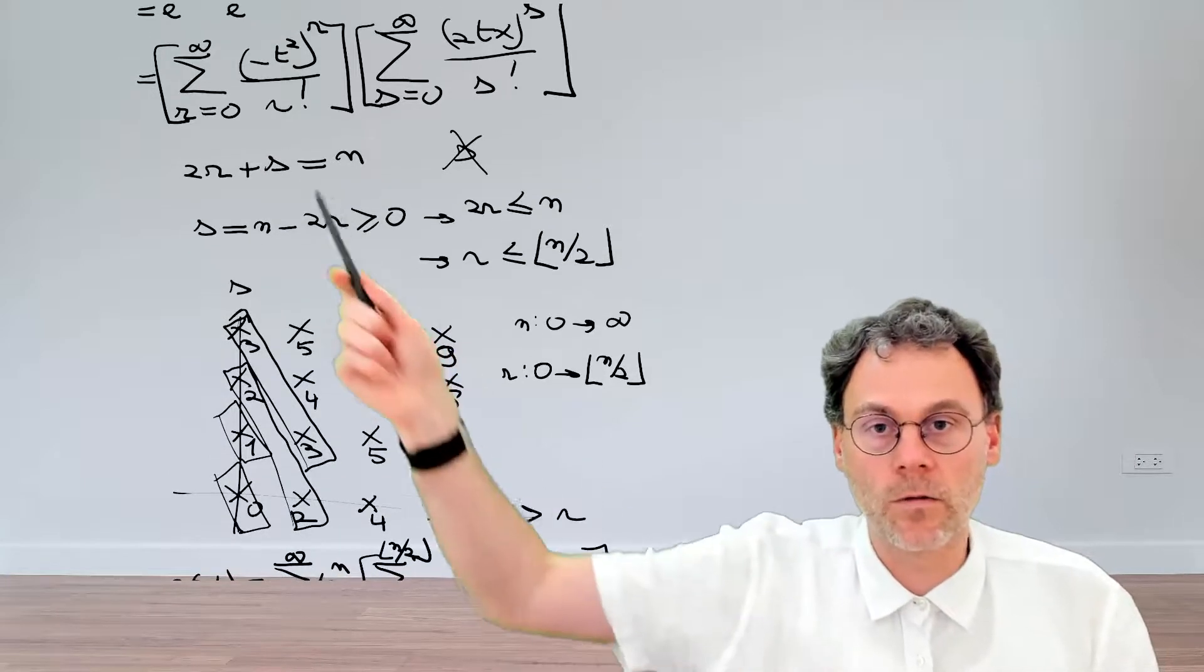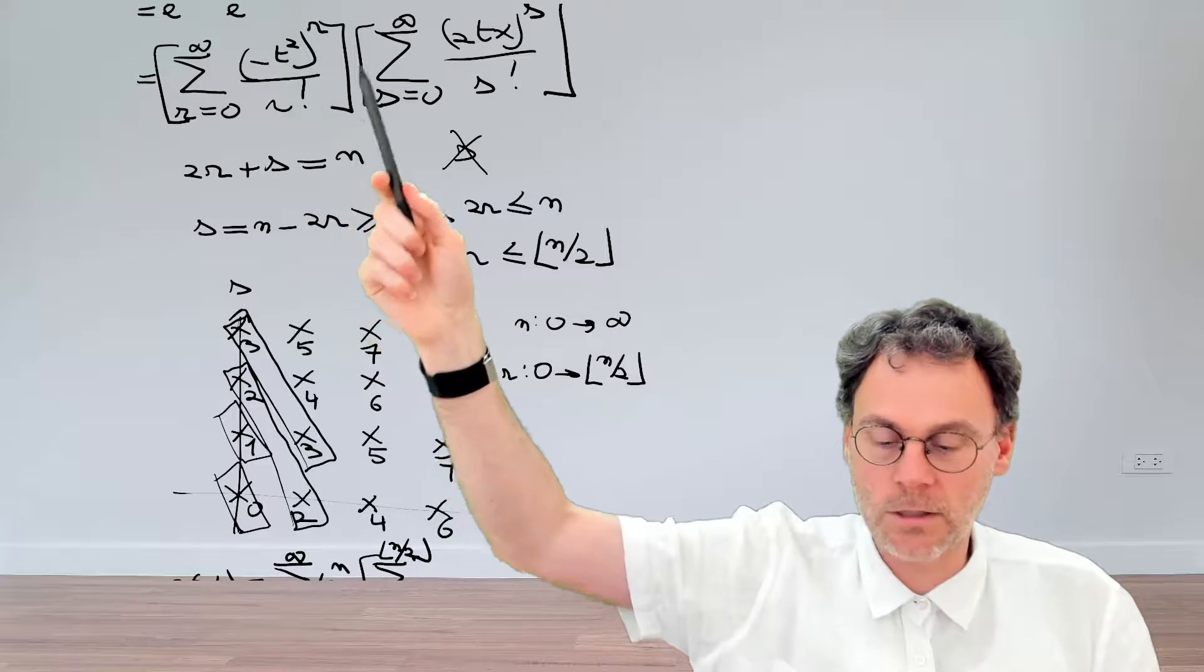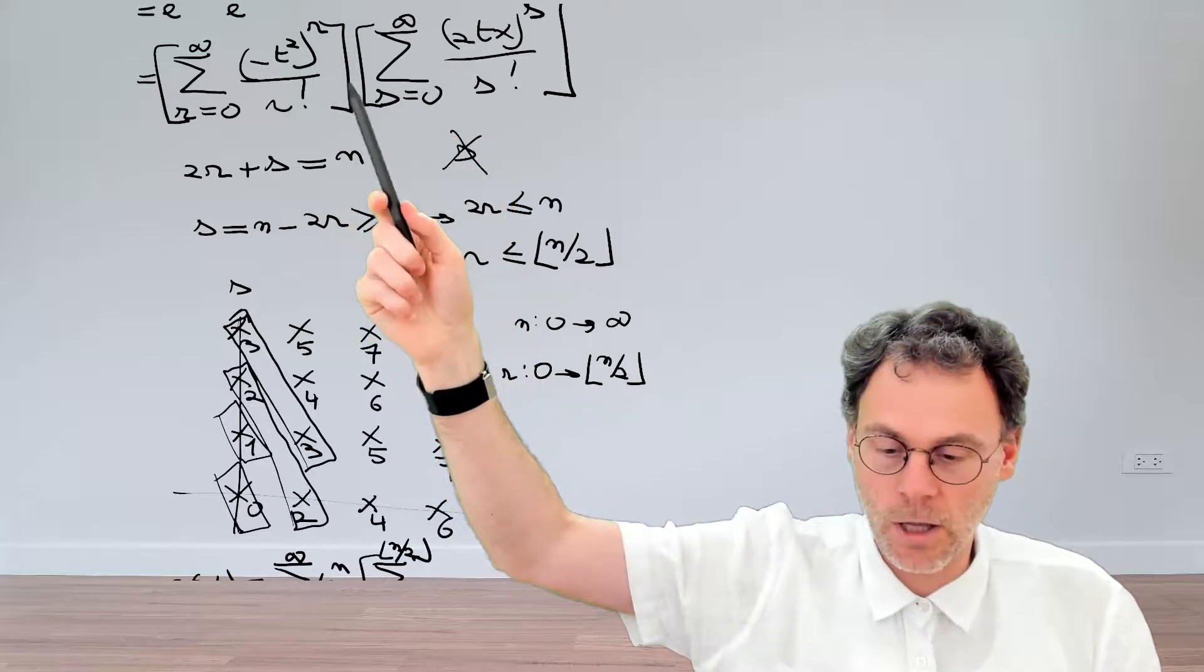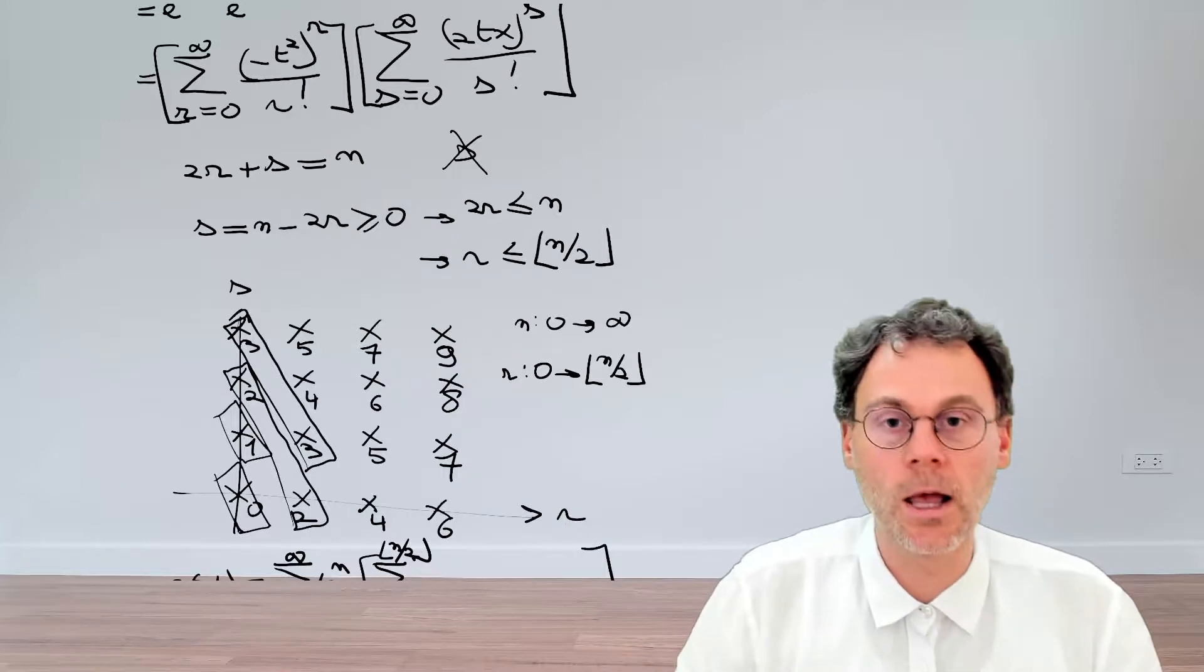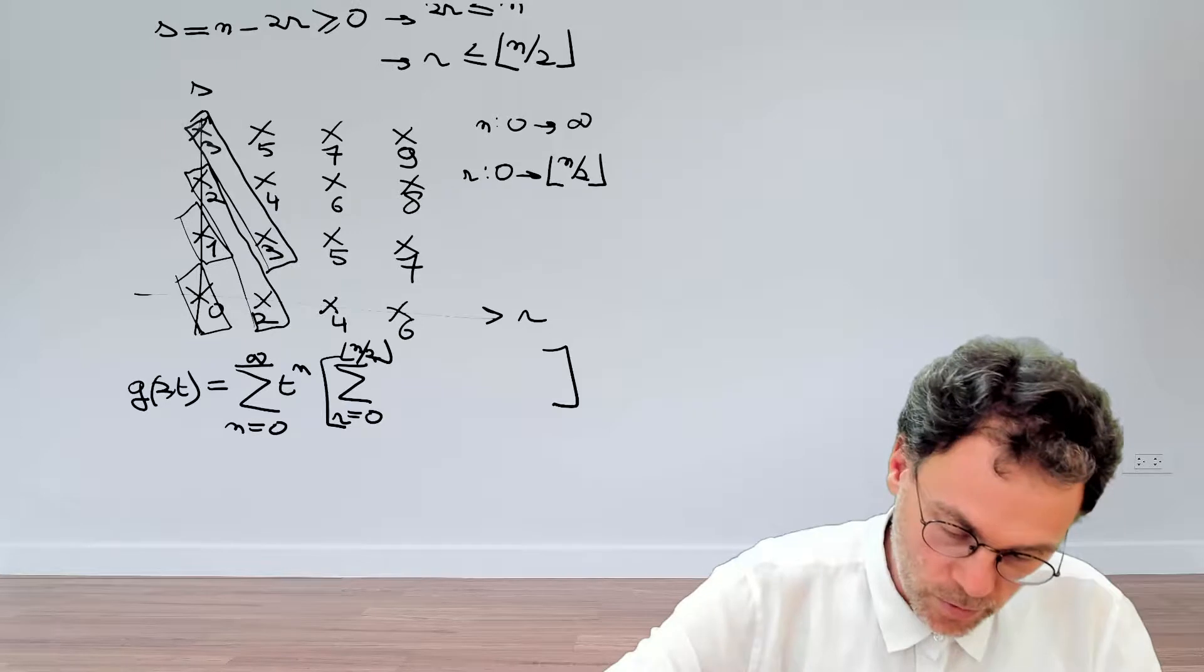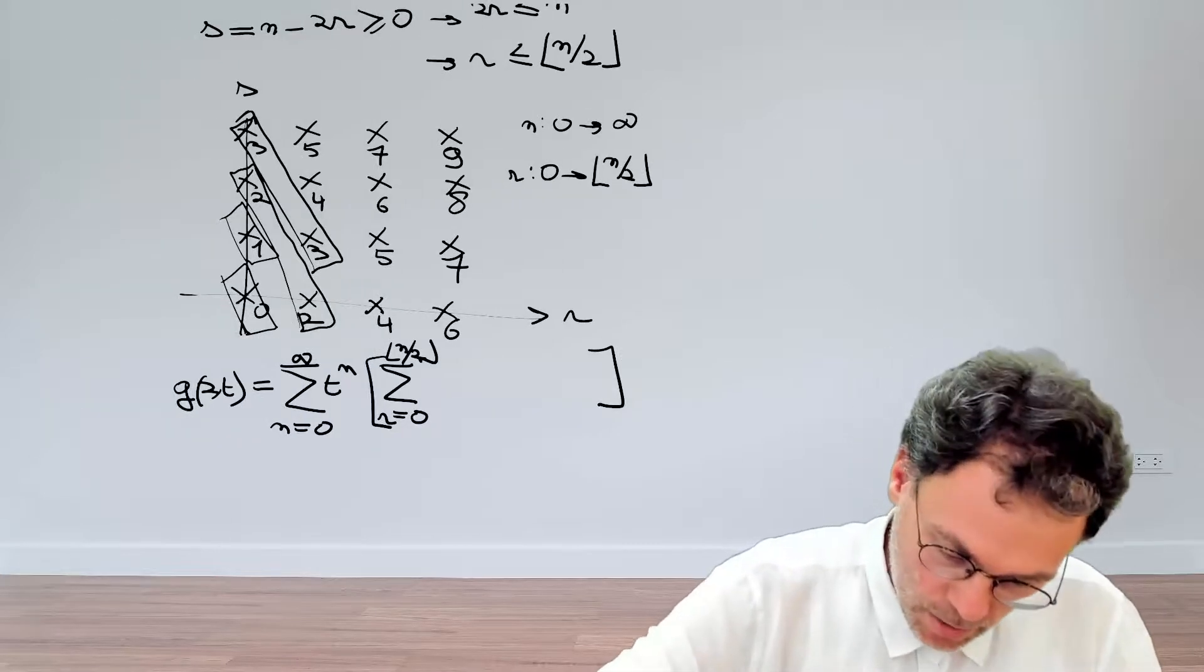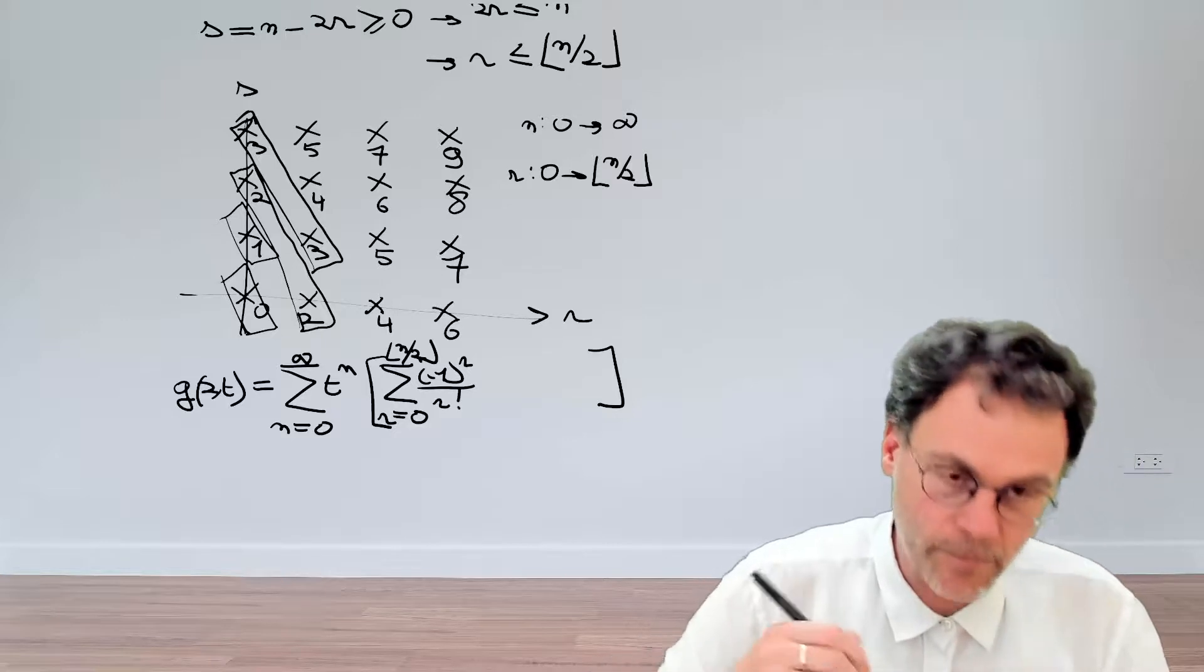So yeah, first over here, we have, of course, minus t squared to the power of r. So the only thing that's left here to look at is this minus 1, and then this r factorial. So we will have minus 1 to the power of r, minus 1 to the power of r divided by r factorial.